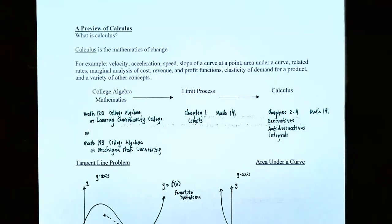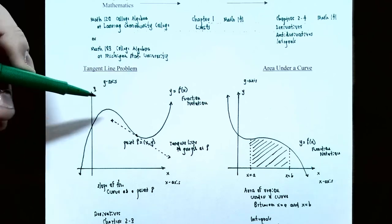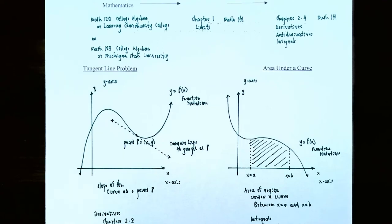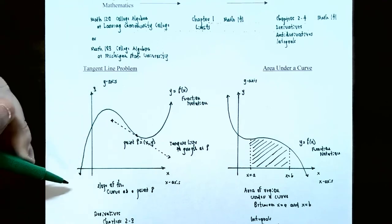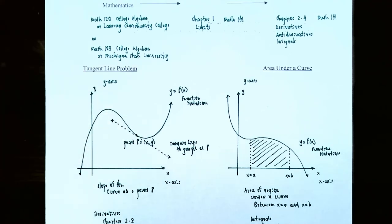Calculus comes down to two main problems. The first is called the tangent line problem. When we talk about the slope of a curve, we're really talking about tangent lines. Say you have an x-axis and a y-axis, and some general curve — any function's graph — that decreases to the left, increases to the right, and has a hill and a valley. For a line, the slope doesn't change — you can pick any two points and the slope will never change no matter what two points you pick.